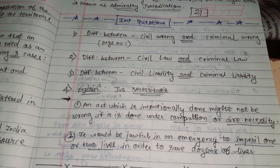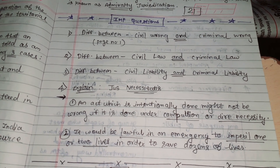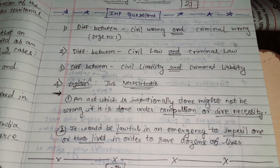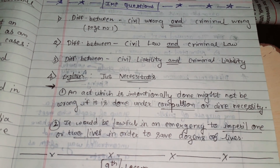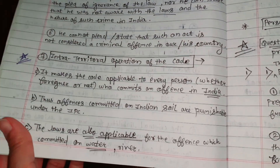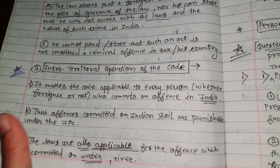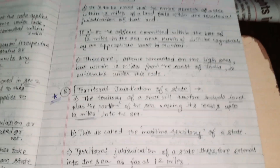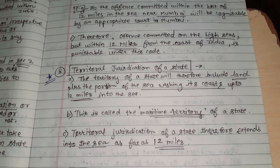Here we have completed the third lesson. In that we have seen the introduction, then Section 1 and Section 2. Section 1 is about the extension of the IPC. Section 2 is about the jurisdiction of the IPC — to whom it applies — and the important concept is intra-territorial jurisdiction of the code, then territorial jurisdiction of the state.